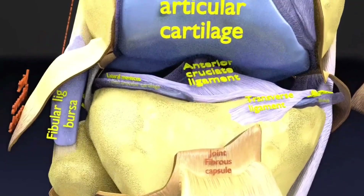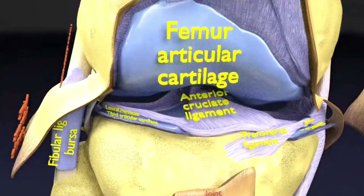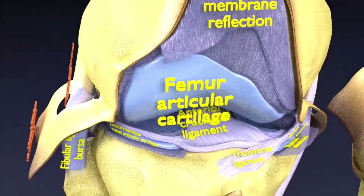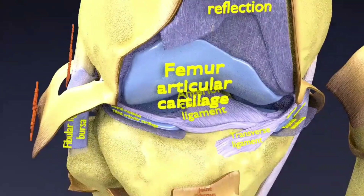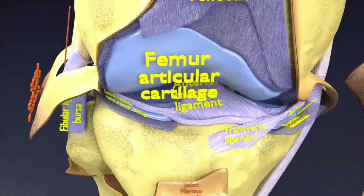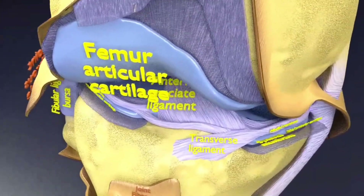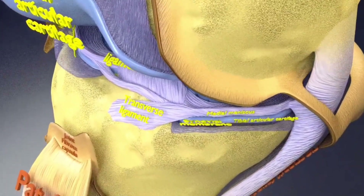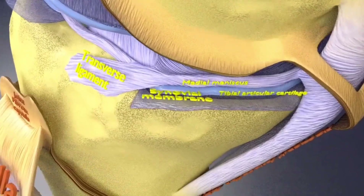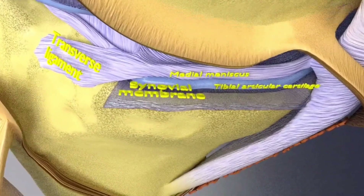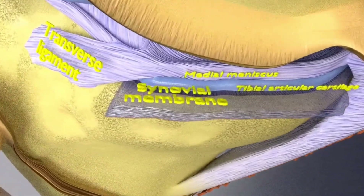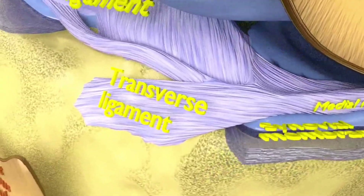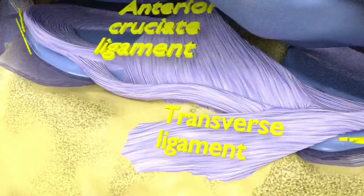It develops as cartilage is lost and the underlying bones become affected. The most commonly involved joints are the two near the ends of the fingers, the joint at the base of the thumbs, the knee, the hip joints, and the joints of the neck and the lower back.